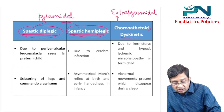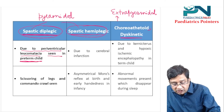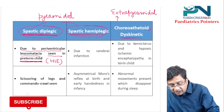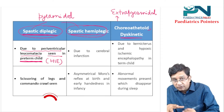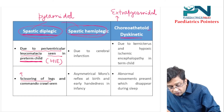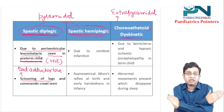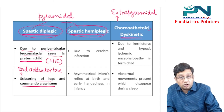Periventricular leukomalacia is seen in the preterm child, caused by hypoxic-ischemic encephalopathy (HIE). When you see the child, there is scissoring of the legs due to increased adductor tone in both lower limbs, and there is presence of a commando crawl.